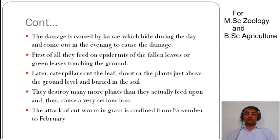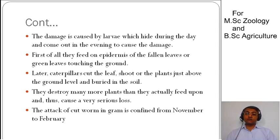In the evening they come out. First, the early instar larvae feed on the epidermis of leaves or fallen leaves touching the ground. When they grow bigger, the caterpillars cut the leaf, shoot, or even the entire plant at the ground level, or cut the leaves of the plant.